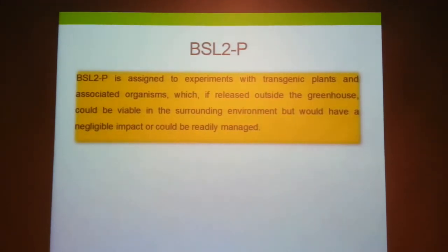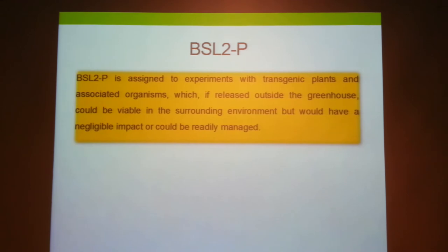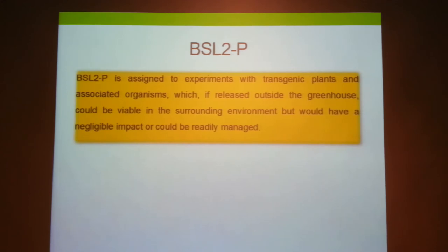BSL-2P involves plants that pose a containable risk. For example, a transgenic or imported cultivar of rice whose pollen spreads and transfers its genes into local rice varieties. In this case, you must ascertain the scale of pollen spread. If grown in an area with only a few paddy plots, you can contain it and compensate farmers. However, if grown where hectares of paddy fields exist, there is greater risk. BSL-2P is a risk posed by a plant that can nonetheless be contained.